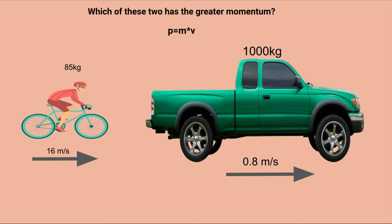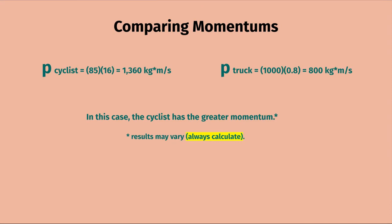Now it's your turn: compare the two objects and decide which has greater momentum. Pause this video before moving forward. The momentum of the cyclist — mass 85 kg times velocity 16 m/s — equals 1,360 kg·m/s. The momentum of the truck — mass 1,000 kg times velocity 0.8 m/s — equals only 800 kg·m/s. Therefore, the cyclist has the greater momentum.